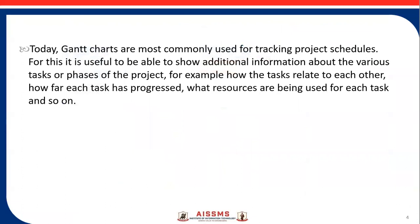Today Gantt charts are most commonly used for tracking project schedules and project progress specifically. It is useful to show additional information about the various tasks or phases of the project — for example, how tasks are related to each other, how far each task has progressed, what resources are being used for each task. Suppose we are in the middle of the project and higher authority wants to check where we are — all these things should be visible to every stakeholder.